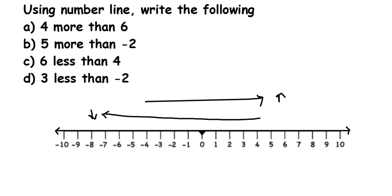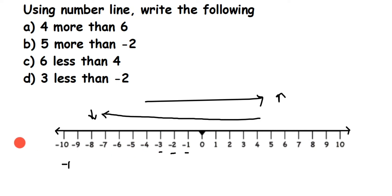When you go towards the left side, the number value keeps decreasing. On the left hand side of zero we have minus 1, minus 2, minus 3. Remember, minus 1 comes to the left side of zero, then minus 2, minus 3, and keeps going towards the left side. The further a number is from zero, the less value it has — for example, minus 10 is here and minus 8 is here.